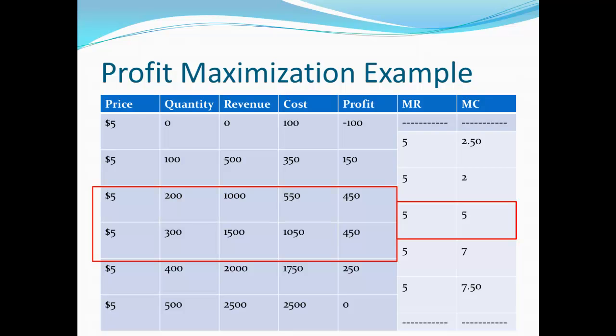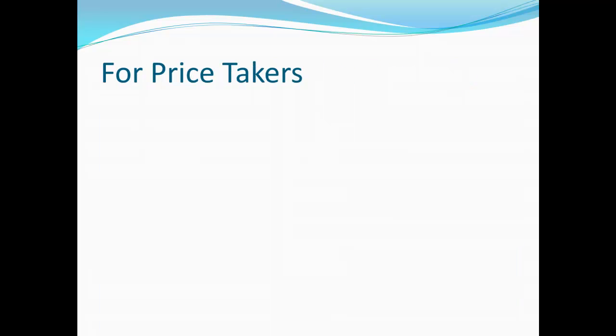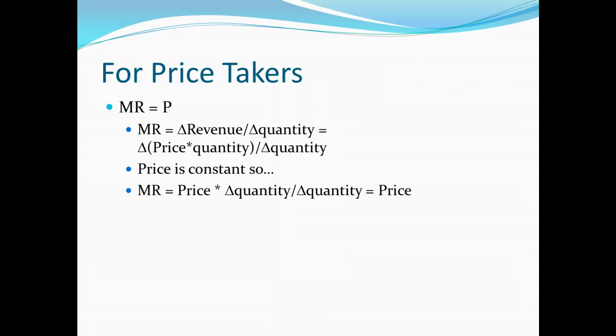This confirms that the Output Rule method gives us the same result as the brute force method of just calculating profit and finding where it's biggest. For price takers, marginal revenue ends up equal to the price.